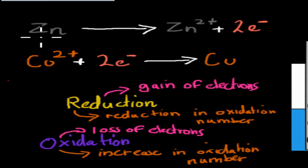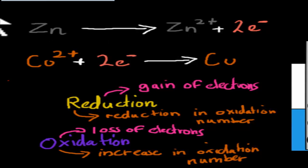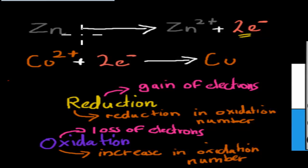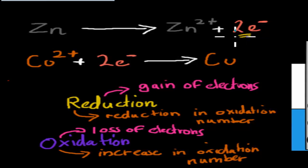Here we've got zinc, which is a zinc electrode, losing electrons — so it's lost electrons right here — and it turns into zinc 2+. Oxidation is loss of electrons. Zinc has lost electrons because zinc was here first at the elemental stage, and now it's lost its two electrons, so it's been oxidized.